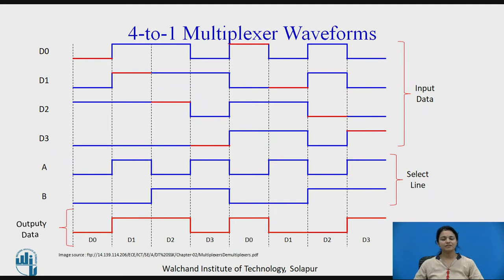We will now see the waveforms for the 4-to-1 multiplexer. There are 4 inputs D0, D1, D2, and D3, and the select lines are shown with A and B waveforms. Whatever data D0 through D3 carry, only the A and B waveforms determine which input is selected. When A=0 and B=0, D0 is selected — shown as a red line. When A is high and B is low, D1 is selected — also shown in red. When A is low and B is high, D2 is selected. And when both A and B are high, D3 is selected.